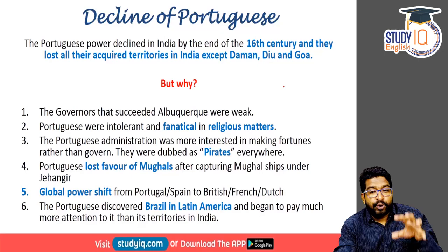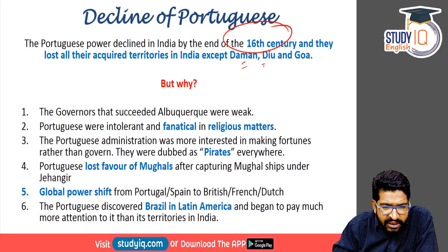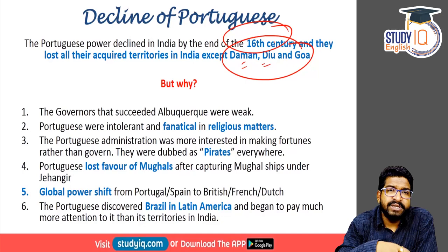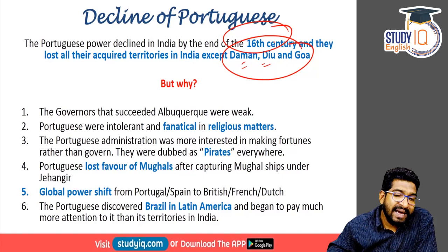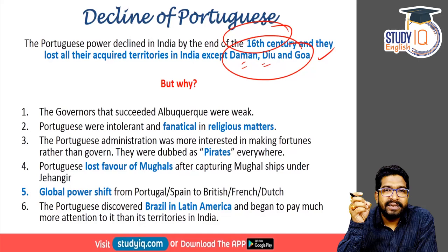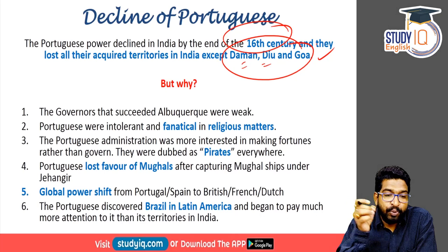But Portuguese power declined by the end of the 16th century. From the beginning of the 17th century they were mainly confined to Daman, Diu, and Goa. They were first defeated by the Dutch, then by the English, and marginalized in the Indian subcontinent. Their possessions and assets in Southeast Asia were also captured — first by the Dutch, then by the British. The power shifted from Spain and Portugal toward the other European colonizers.